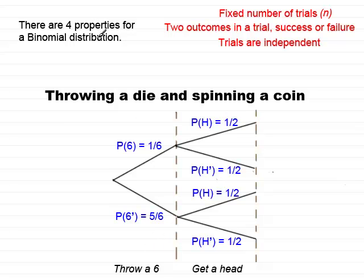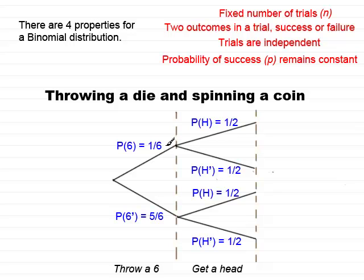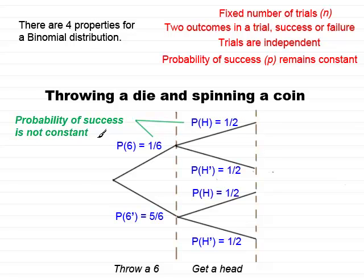What is the fourth property of a binomial distribution? Well, the fourth property is that the probability of success, p, remains constant. Now the success here was throwing a six, and it was one sixth. And the success in the coin trial of getting a head — the probability of getting a head was a half. You'll notice that the probability of getting a success is not constant; it has changed from one sixth to a half. So the probability of success is not constant, and I haven't met this property for a binomial distribution. I have to rule out this type of tree diagram.